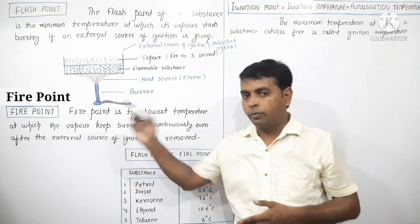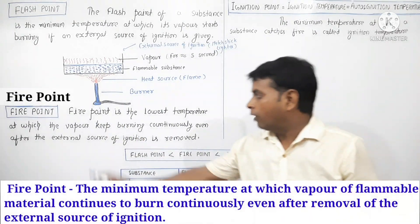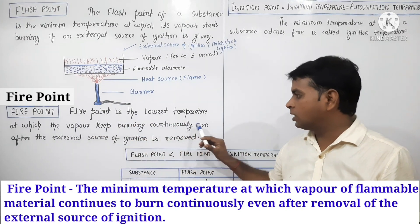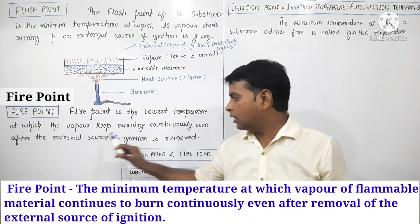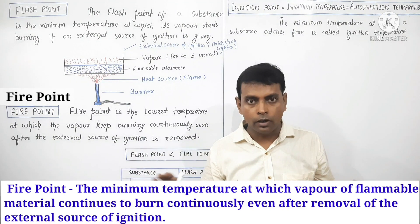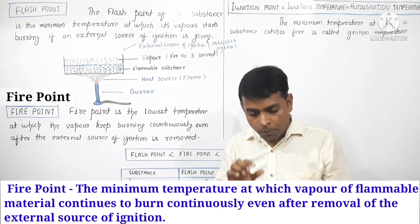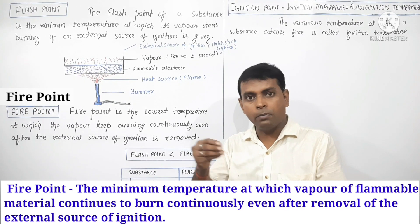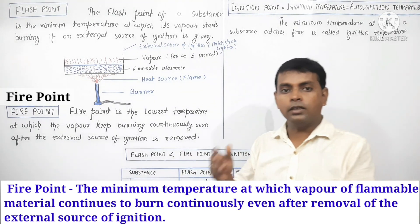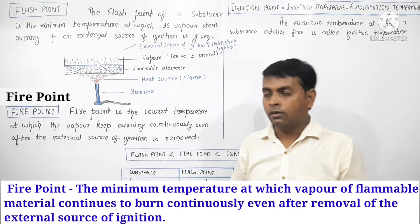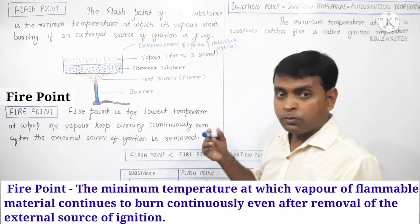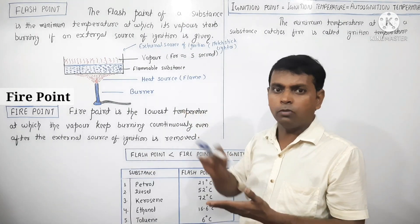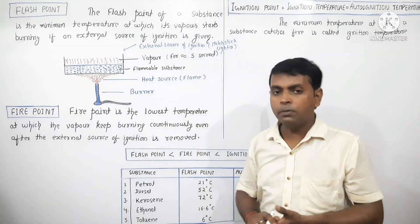Today's next topic is fire point. Fire point is the lowest temperature at which the vapor keeps burning continuously even after the external source of ignition is removed. We have seen that at flash point, burning lasts approximately 5 seconds. But fire point is different — the burning continues even after removing the external ignition source.